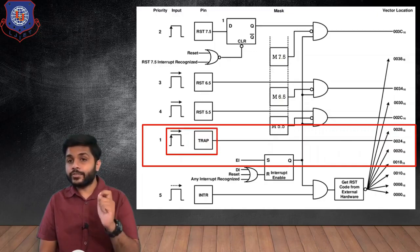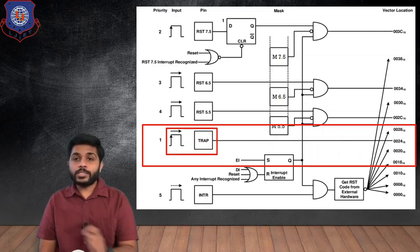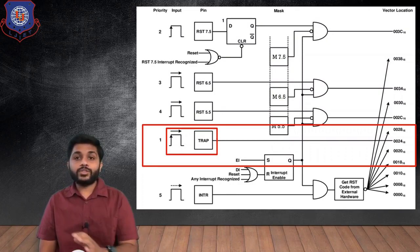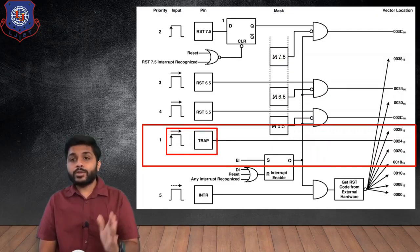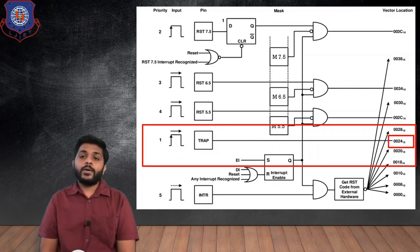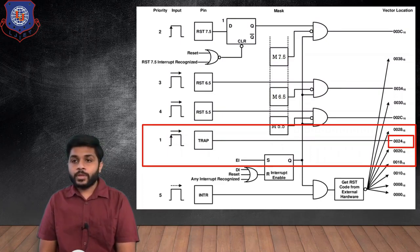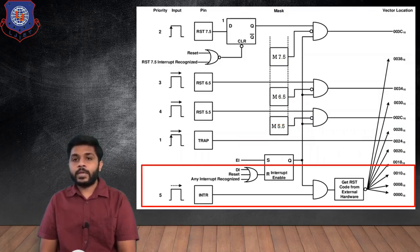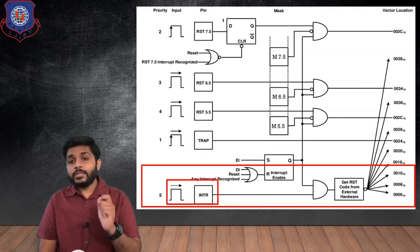The TRAP interrupt is both level triggered and edge triggered. Whenever any signal is received at the TRAP pin, the processor will not check whether the interrupt enable flip-flop is set or not, and will also not check whether TRAP is masked, because TRAP is non-maskable and the highest priority interrupt. The processor will immediately stop its current execution and jump to the vector location for TRAP, which is 0024H.